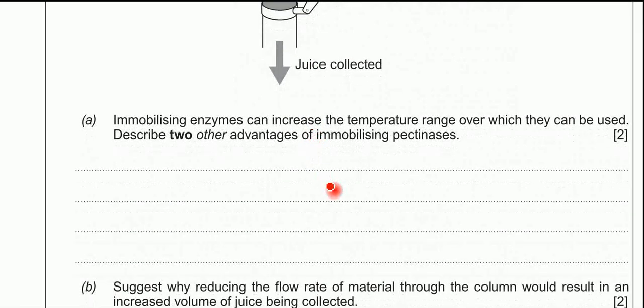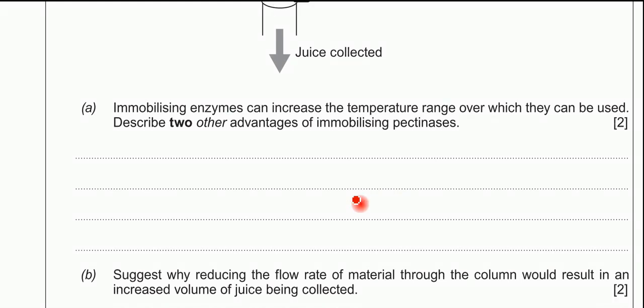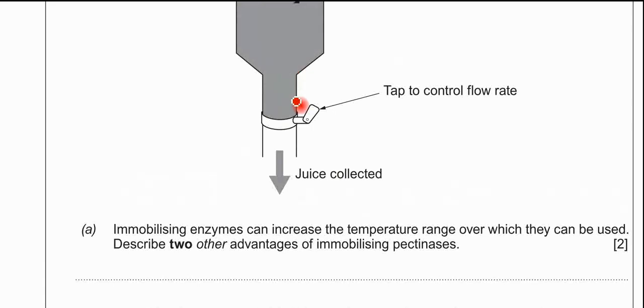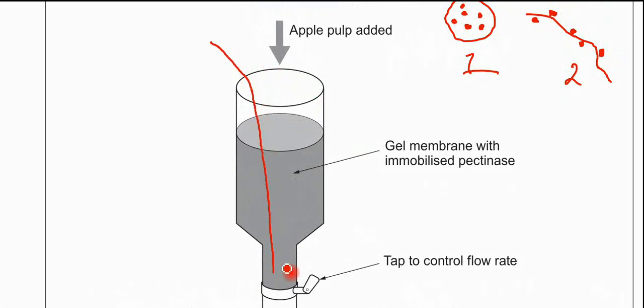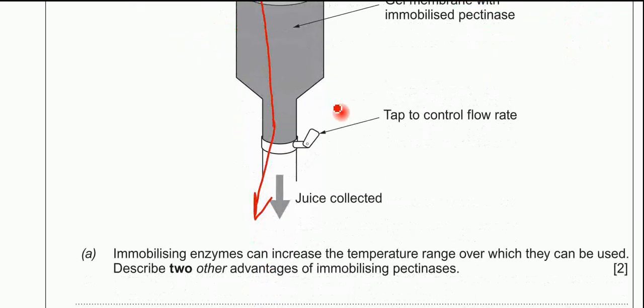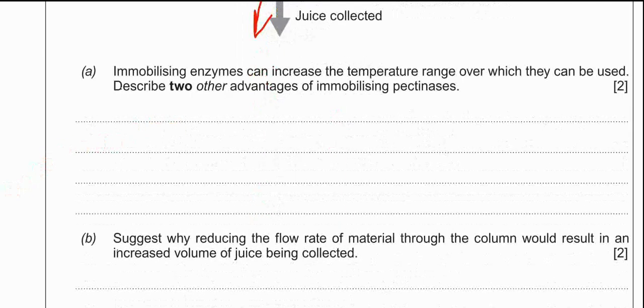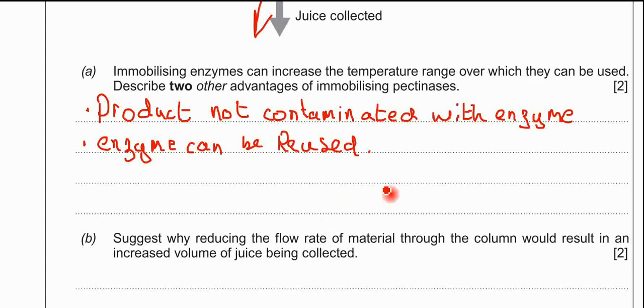Part A is telling you that immobilized enzymes can increase the temperature range over which they can be used. That's one advantage of immobilized enzymes. You're then asked to describe two other advantages of using the pectinases. Standard answer here: the product is not contaminated with the enzyme because it remains within the column. The enzymes can be reused, and the enzymes can tolerate a much wider range of pH. And lastly, these enzymes can be used in a continuous process.